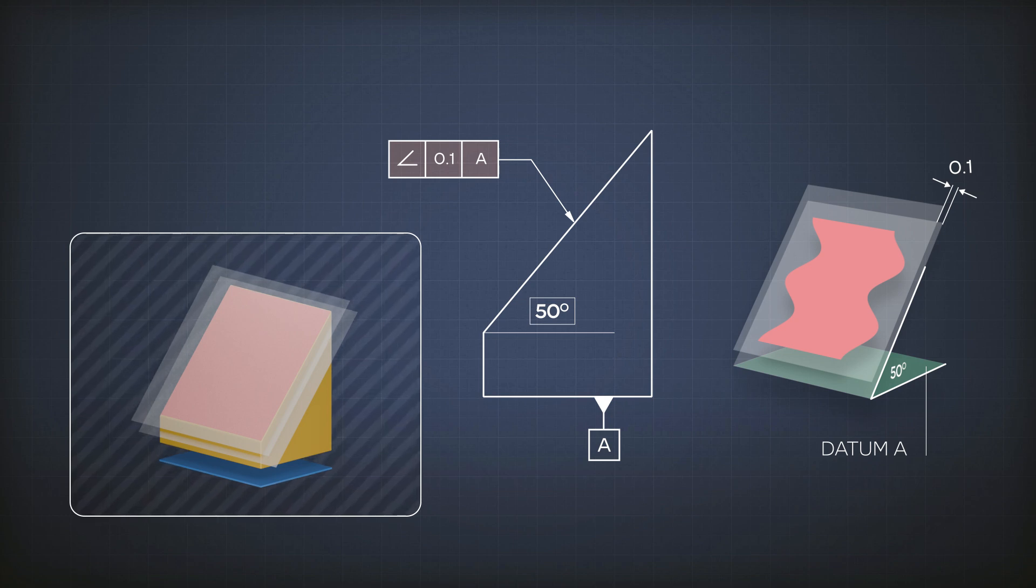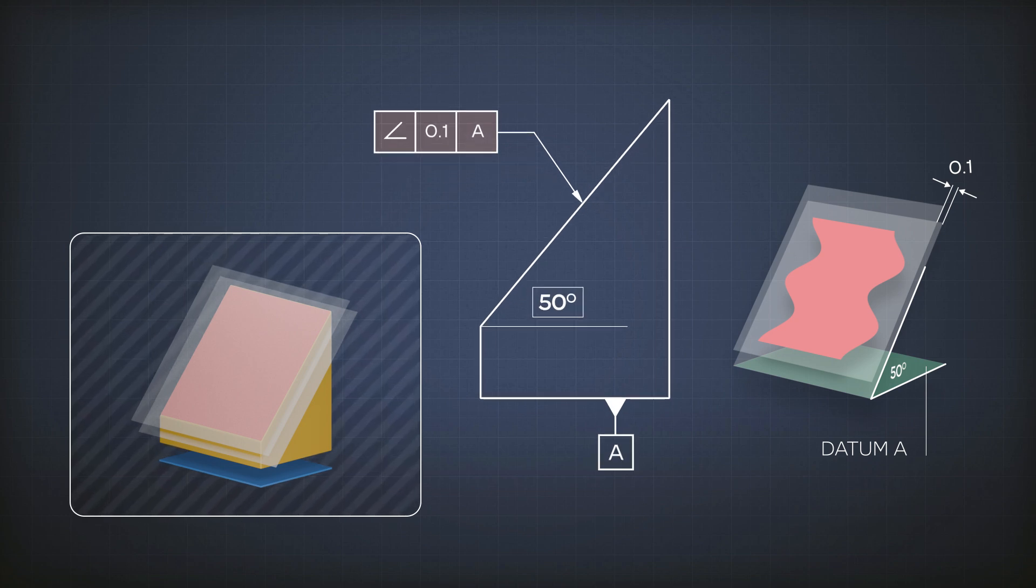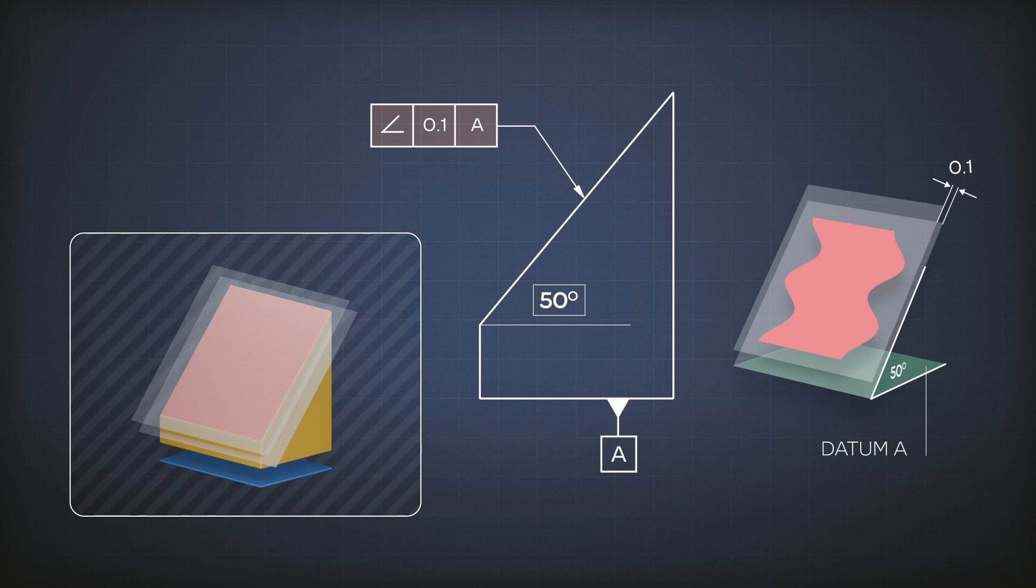With parallelism, I didn't have to write 0 degrees into the drawing because anyone can see it directly. But here, I have to specify the value of this angle and it has to be a basic dimension. Which means it doesn't have any tolerances because the tolerance is given using the feature control frame.